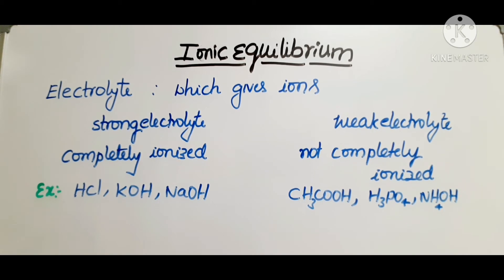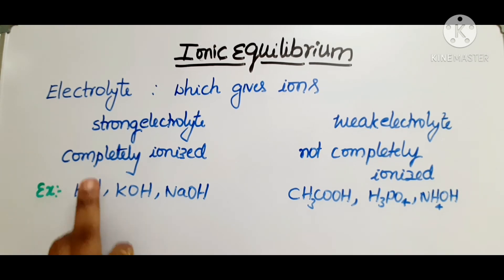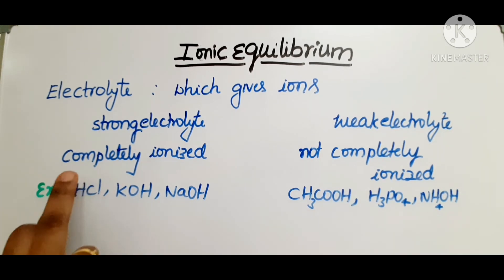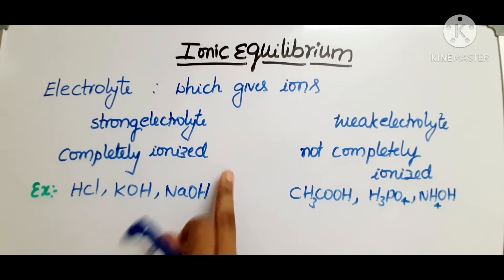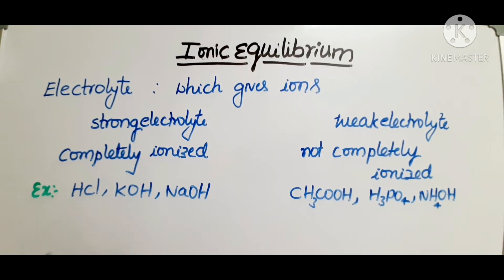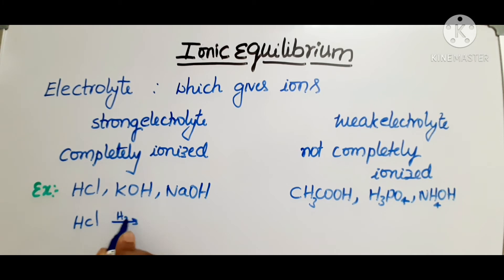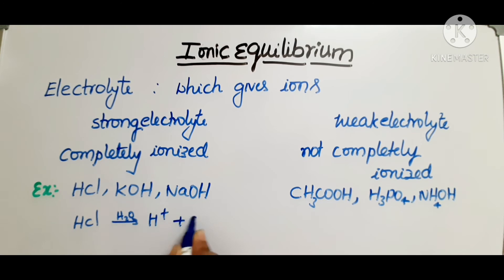Among electrolytes, we have strong electrolytes and weak electrolytes. Strong electrolytes are those which are completely ionized. For example, if you take HCl in aqueous medium, it will ionize completely into H⁺ and Cl⁻.